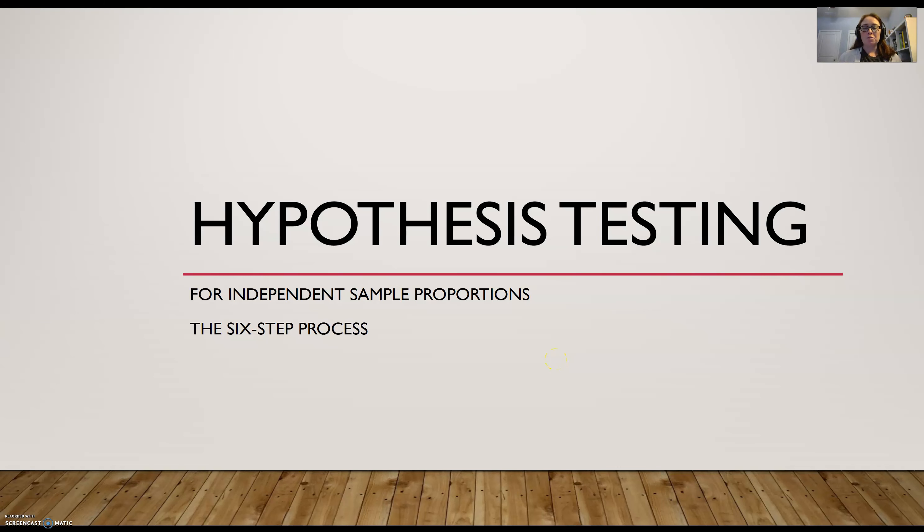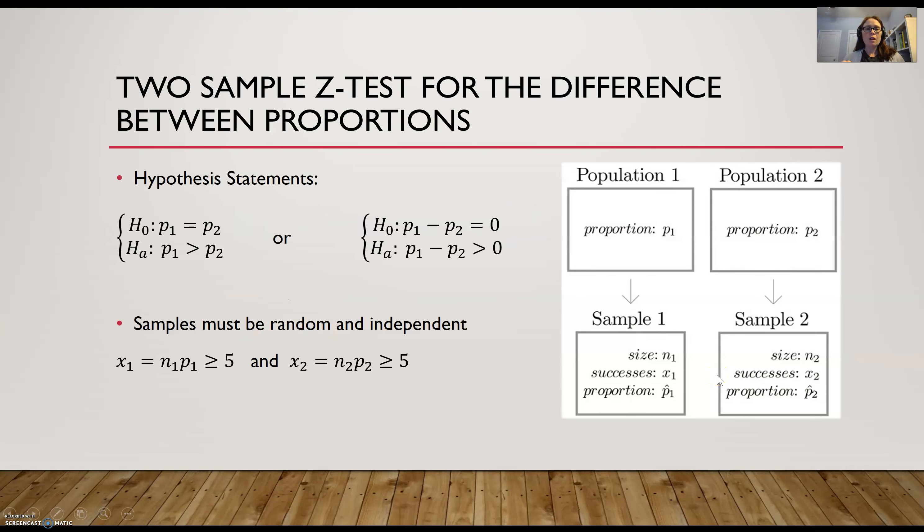Today we're going to run through how to do a hypothesis test for two sample proportions using our six-step process. Now with two sample proportions, we're going to be doing a z-test, so we're using the standard normal curve.